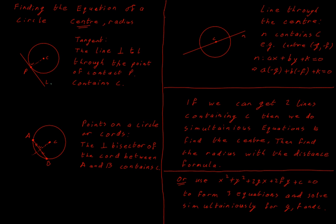How would I use this in practice? I'd get the slope of L, then get the perpendicular of that slope, which is the slope of my dashed line. If I have the coordinates of point P and that perpendicular slope, I'd have the equation of a line that goes through the center of my circle. If I have two of them, I can do simultaneous equations to find the center.